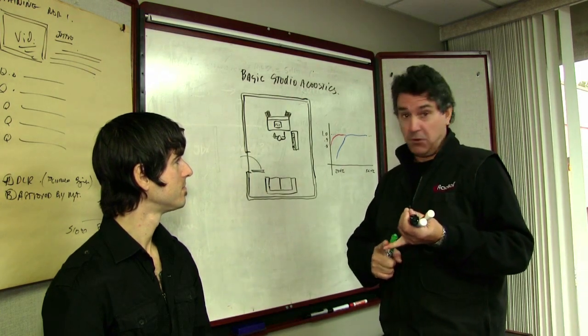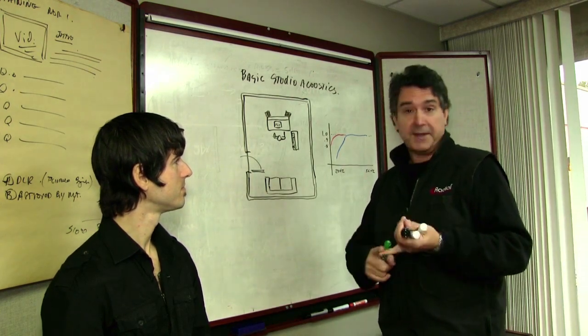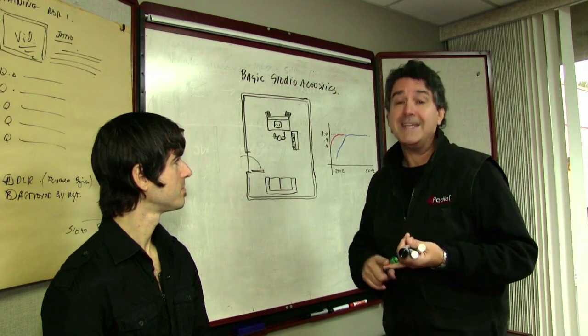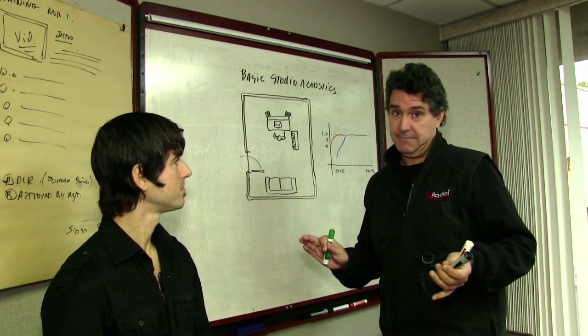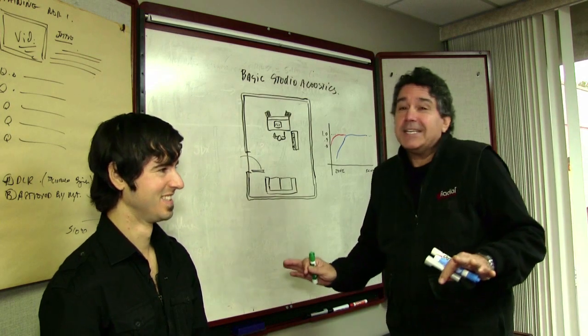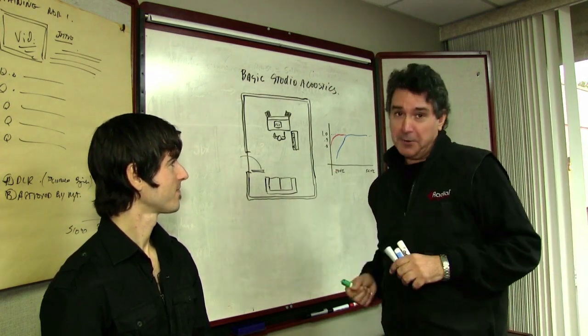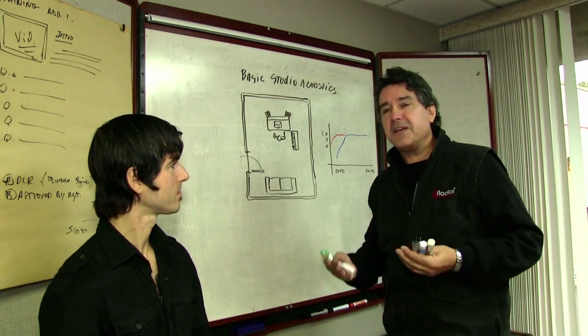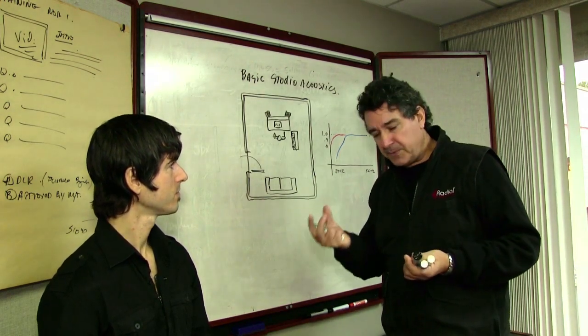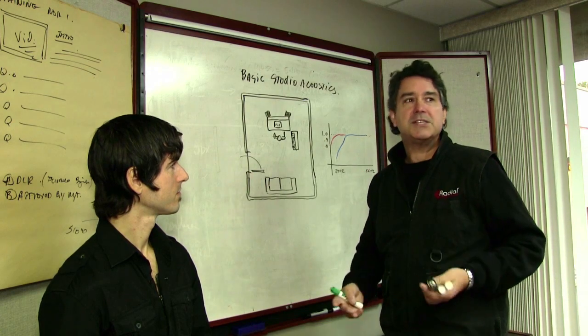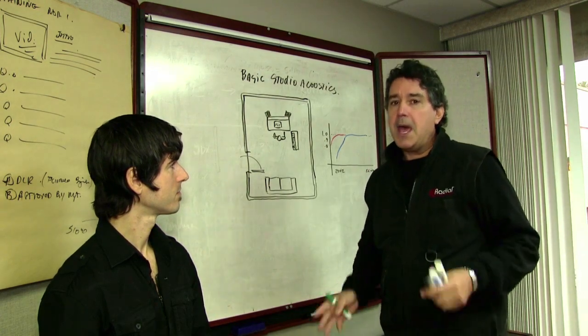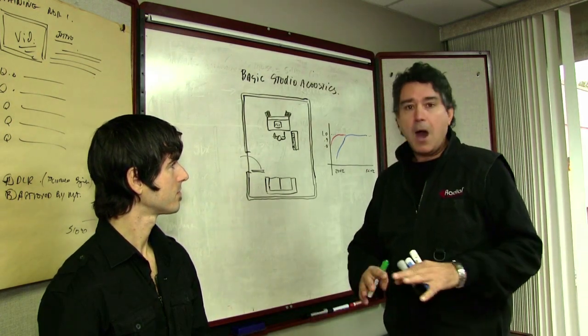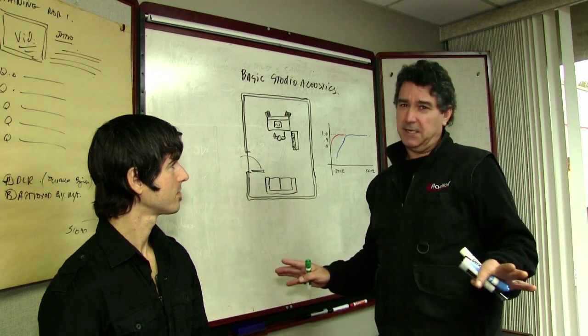If you've got a train going by your house all day, the easiest solution is move. Don't try to fix it. You're going to pick the low fruit from the tree. Don't try to do things that are too difficult to deal with. Bass is hard to deal with. Mids and high frequencies are easy to deal with.